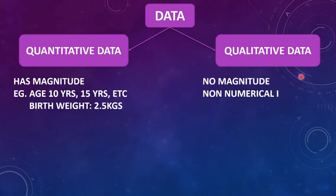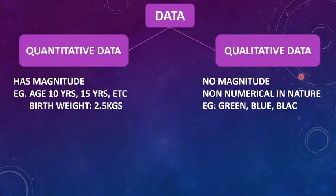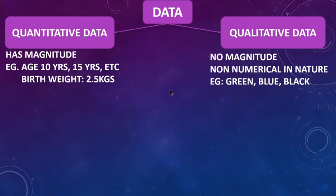The second type of data is qualitative data. This data has no magnitude; it is non-numerical in nature. Qualitative data can be just observed and recorded. For example, the color of eyes — green, blue, black — all these are qualities. Quantitative data can be further divided into two types: discrete data and continuous data.